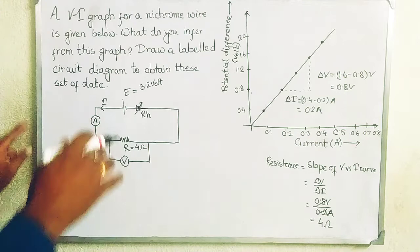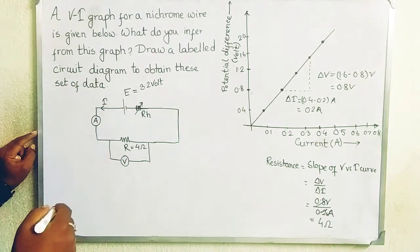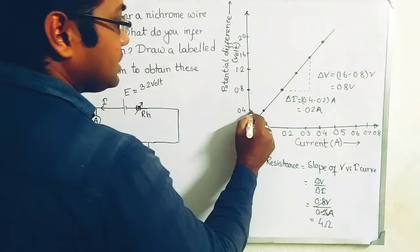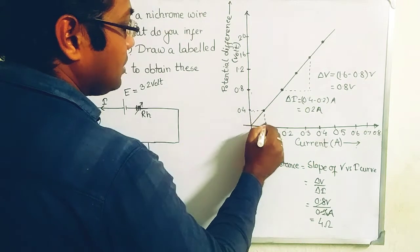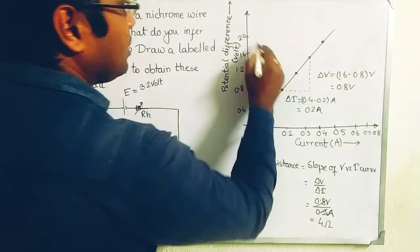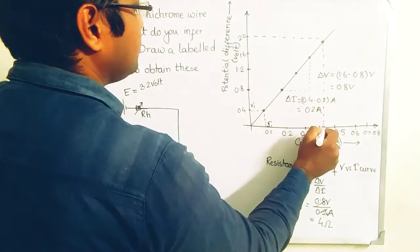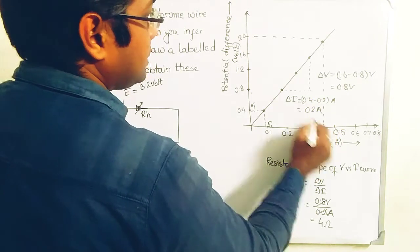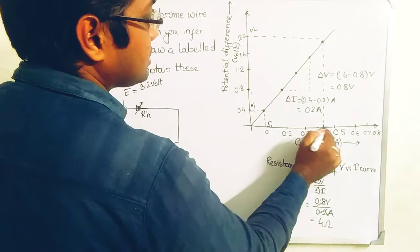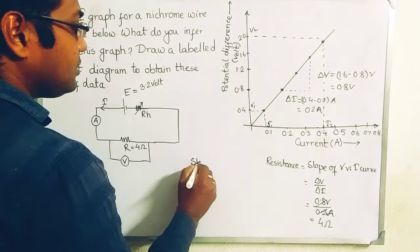There is another way of calculating the potential difference versus current graph slope. I just take this one. This is another procedure. Let us say it is I1 and let us say it is V1. I can take any point here. Let us take this point. This is V2, and here it intersects here somewhere, so it is I2. I can easily calculate the slope.